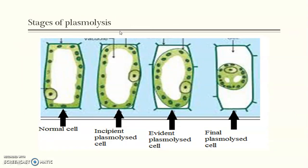Stages of plasmolysis. It is not that we keep the cell in a hypertonic solution and it becomes completely plasmolyzed instantly. This process is gradual — the water in the cell sap leaves through exosmosis gradually. That is why the cell shape changes in stages. The different stages of plasmolysis are: Incipient plasmolysis, Evident plasmolysis, and Final plasmolysis.